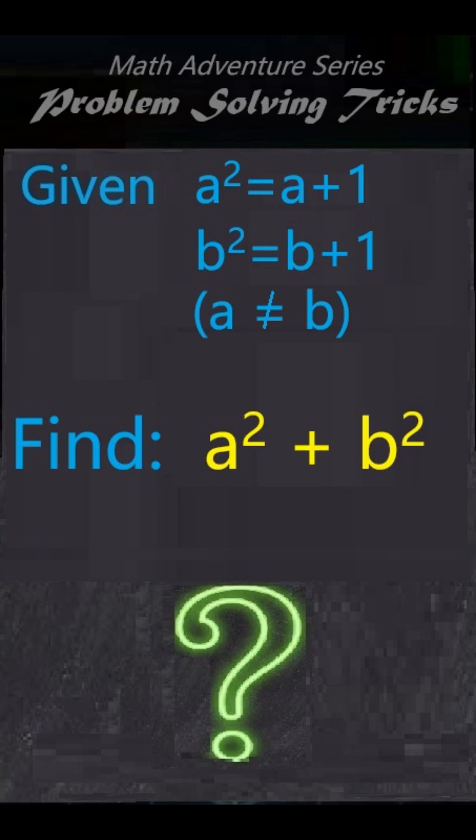We're given: a square equals a plus 1, b square equals b plus 1, and a is not equal to b. Find a square plus b square.